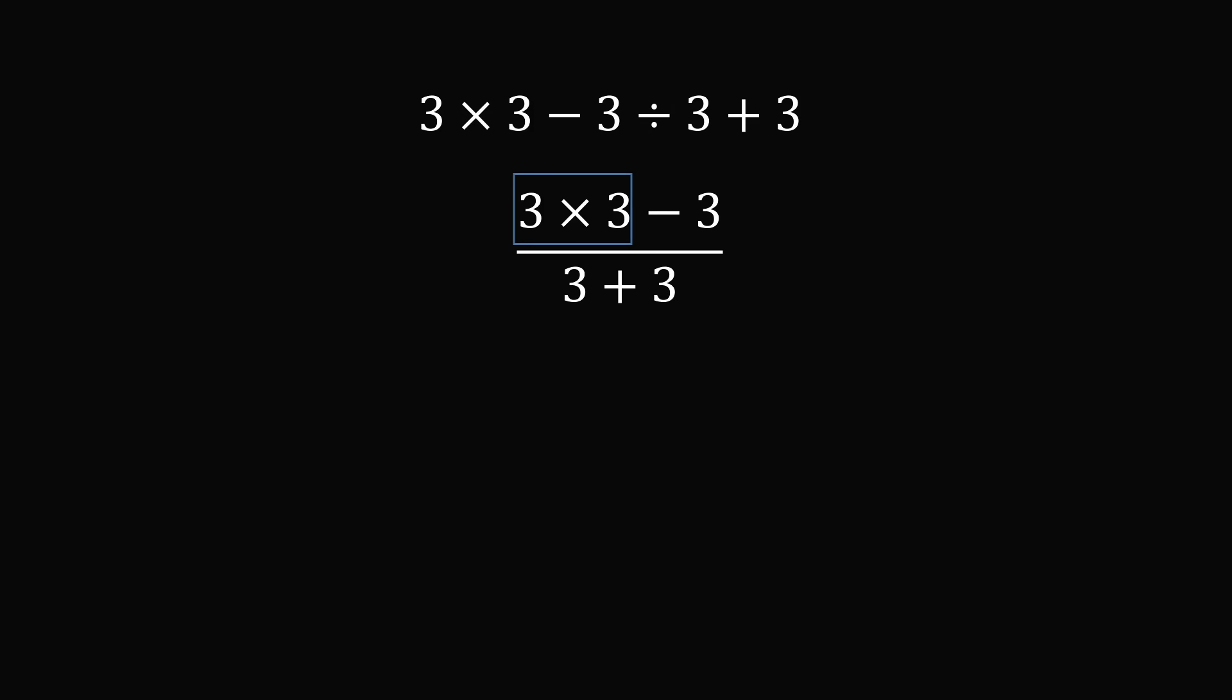We start out with 3 times 3, which is equal to 9. We then have 9 minus 3, which is equal to 6 in the numerator, and 3 plus 3, which is also equal to 6 in the denominator. So this is equal to 6 over 6, which simplifies to be 1. And there are genuinely people who would say 1 is the correct answer. I would suggest this is not correct according to the modern interpretation of the order of operations.